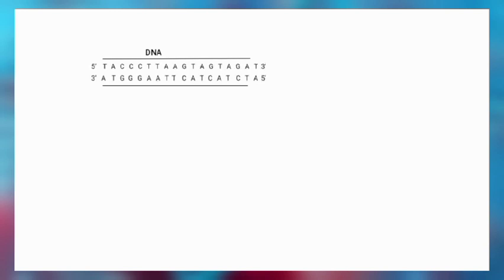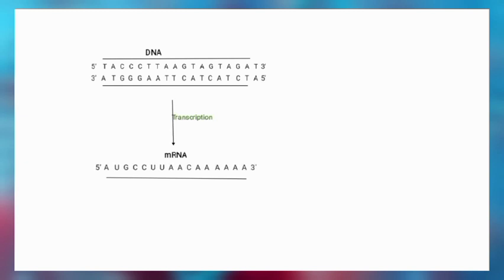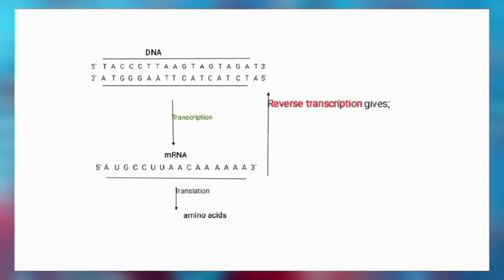Consider a DNA molecule — a segment of a gene in this molecule will undergo transcription to produce an mRNA, and then the mRNA undergoes translation to produce an amino acid, and gene expression is said to have taken place. If you want to reverse the process — that is, convert mRNA back to DNA — then the type of DNA formed is called cDNA, and the process is called reverse transcription. We can therefore define cDNA as a double-stranded DNA molecule synthesized from a single-stranded RNA template.